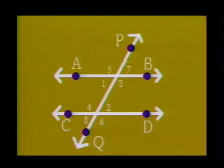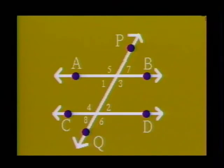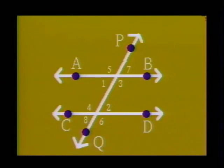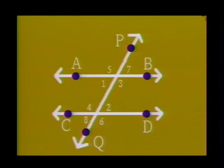When a transversal crosses two parallel lines, then a special relationship exists between certain angles. If two parallel lines are cut by a transversal, then alternate interior angles are congruent, alternate exterior angles are congruent, and corresponding angles are congruent.